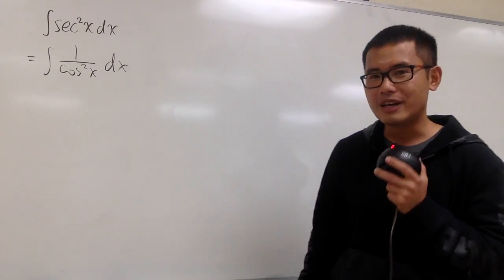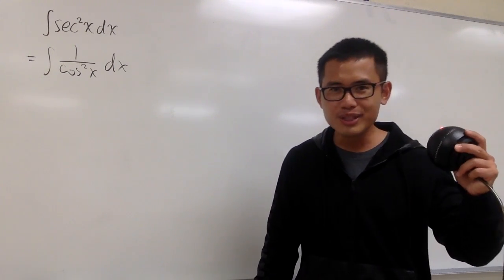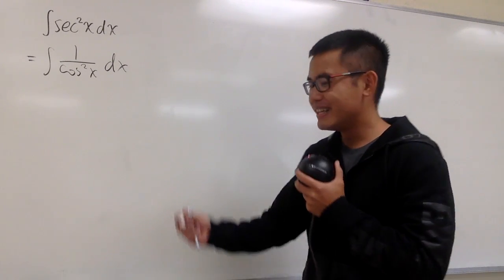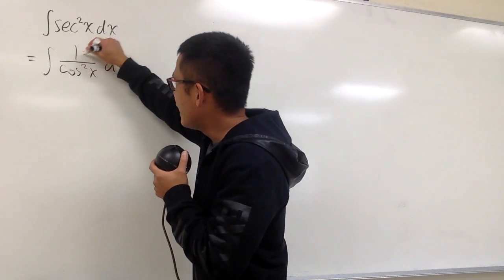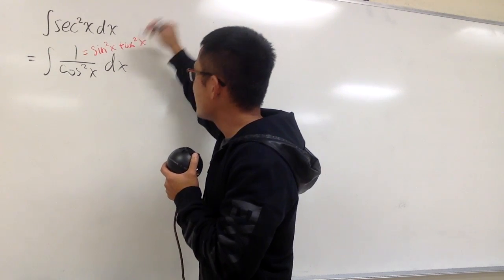Yes, we do. We have a famous one. Sine squared x plus cosine squared x is equal to 1. And we can totally look at that backwards. So now let's look at the 1 as sine squared x plus cosine squared x.